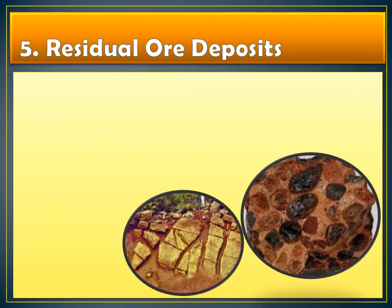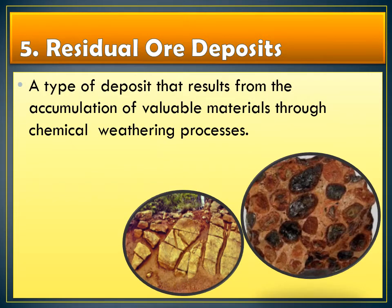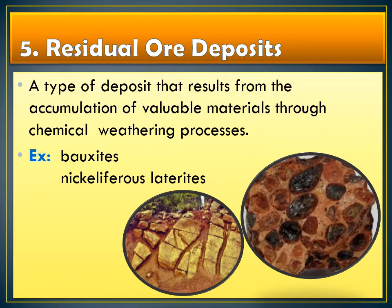Lastly, we have residual ore deposits. These are the type of deposit that results from accumulation of valuable materials through chemical weathering processes. In this process, the rocks and enclosed mineral deposits undergo disintegration and decomposition through weathering. The soluble parts are removed and the insoluble residues accumulate, forming the residual mineral deposit. One example is bauxite. Bauxite is derived when aluminum-rich source rock undergoes intense chemical weathering brought by prolonged rains, which leaches common elements including silicon, sodium, and calcium, and whatever insoluble mineral is left is now called bauxite.